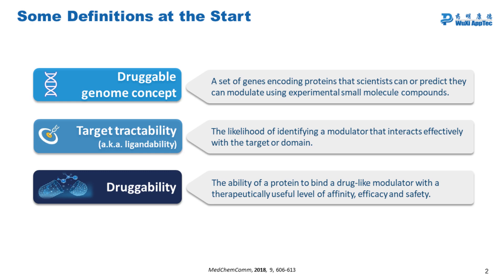Approximately 3,000 genes are considered part of the so-called druggable genome. This is a set of genes and cognate proteins that scientists can modulate using experimental small molecule compounds. Currently, only a few hundred targets are targeted by pharmaceuticals, meaning there is a huge majority of open targets still available. But before we target a protein, we have to estimate so-called target tractability, also known as ligandability.